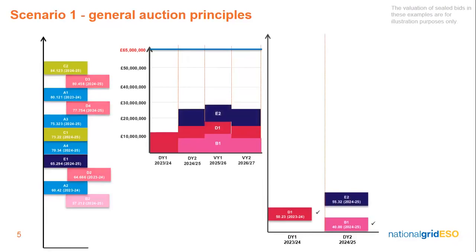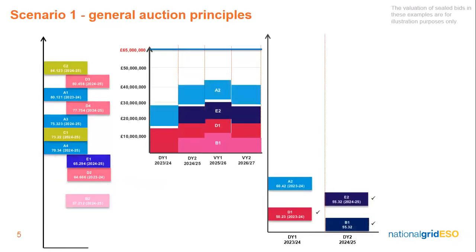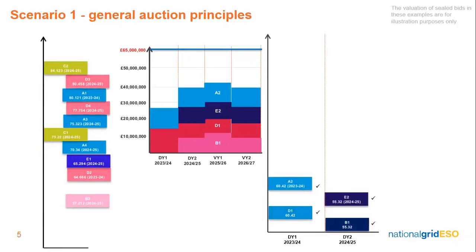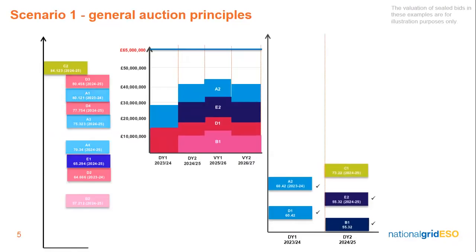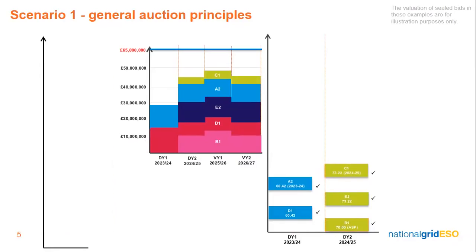The auction continues with E2 under consideration. It is also allocated and uplifts the strike price of bid B1 from the same delivery year. A2 is allocated and uplifts D1's strike price in delivery year 1. C1 is allocated and uplifts both bids E2 and B1, but you can see here that B1 is capped at its £70 technology-specific ASP. This is the end of the auction. The highest successful strike prices set the clearing price for each delivery year. For delivery year 1, A2 has set the clearing price at £60.42, and for delivery year 2, C1 has set the clearing price to £73.22, while B1 is capped at its £70 technology-specific ASP.